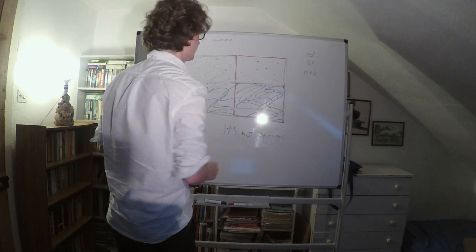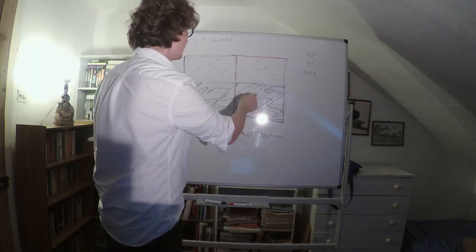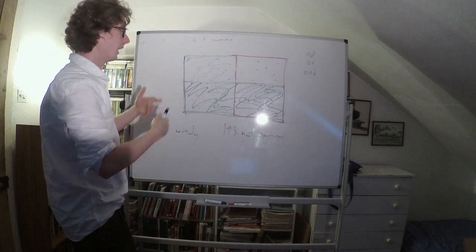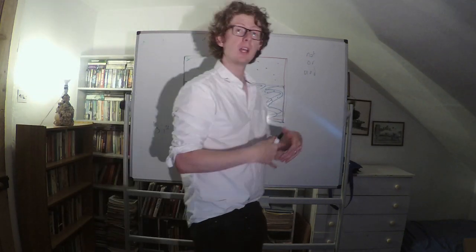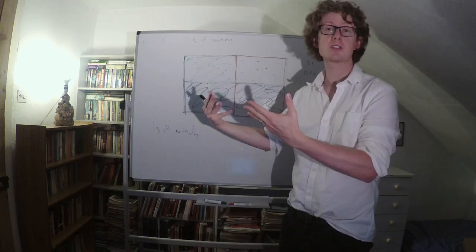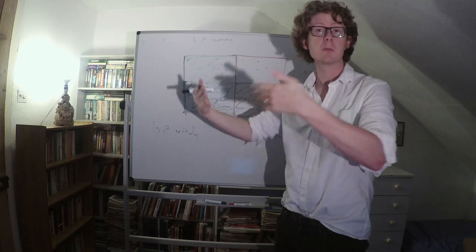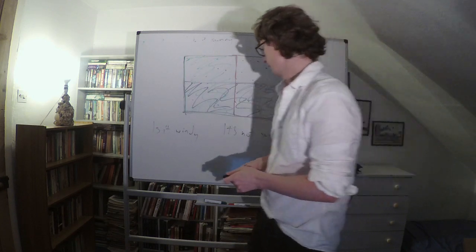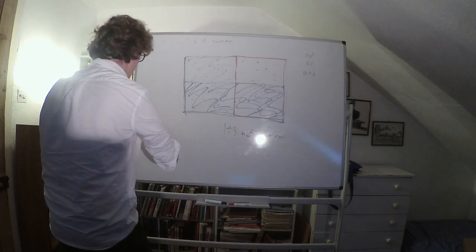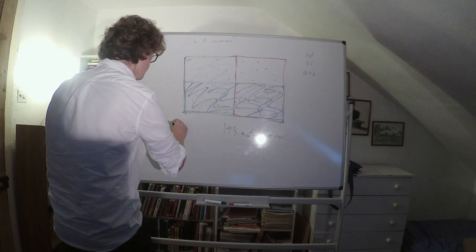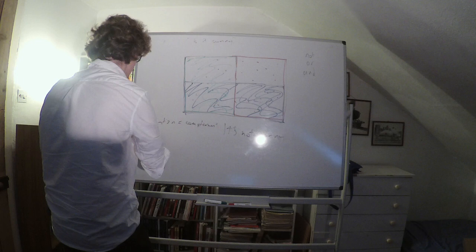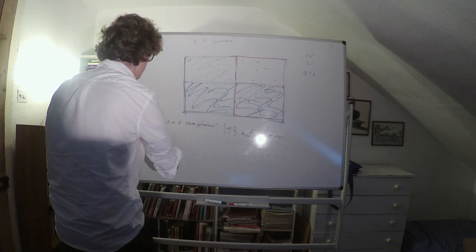This whole region is the region where it's sunny or windy. In general, disjunction just amounts to unioning. So if you have two propositions, you form the disjunction by just unioning the two sets together. So far we have: negation equals complement, and OR equals union.